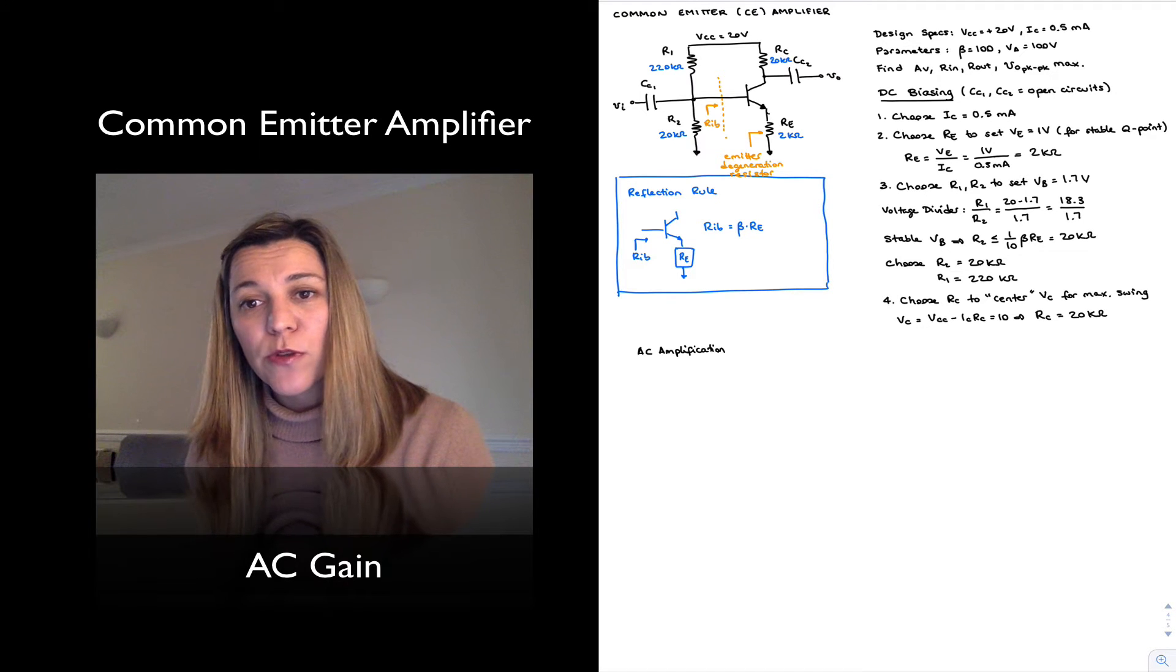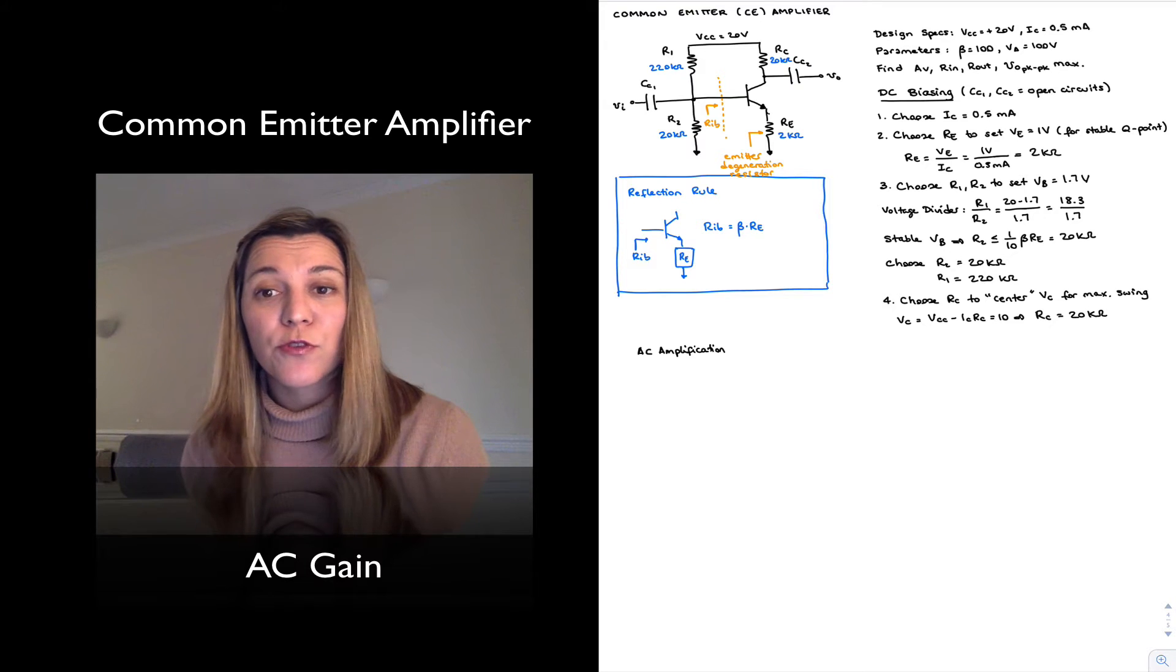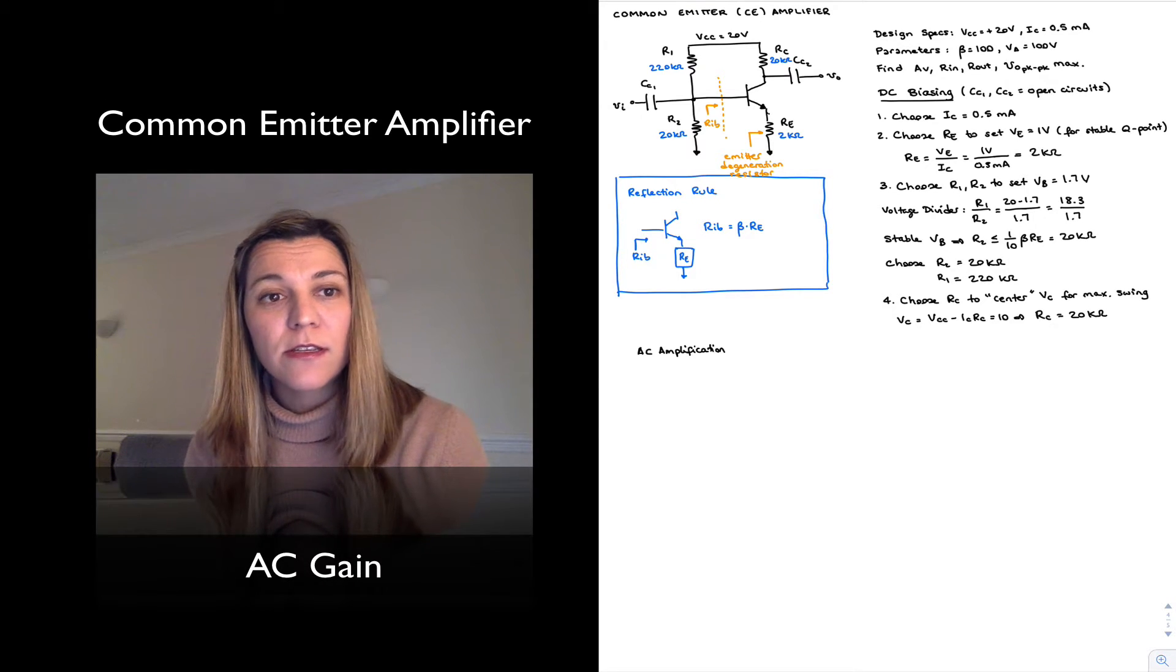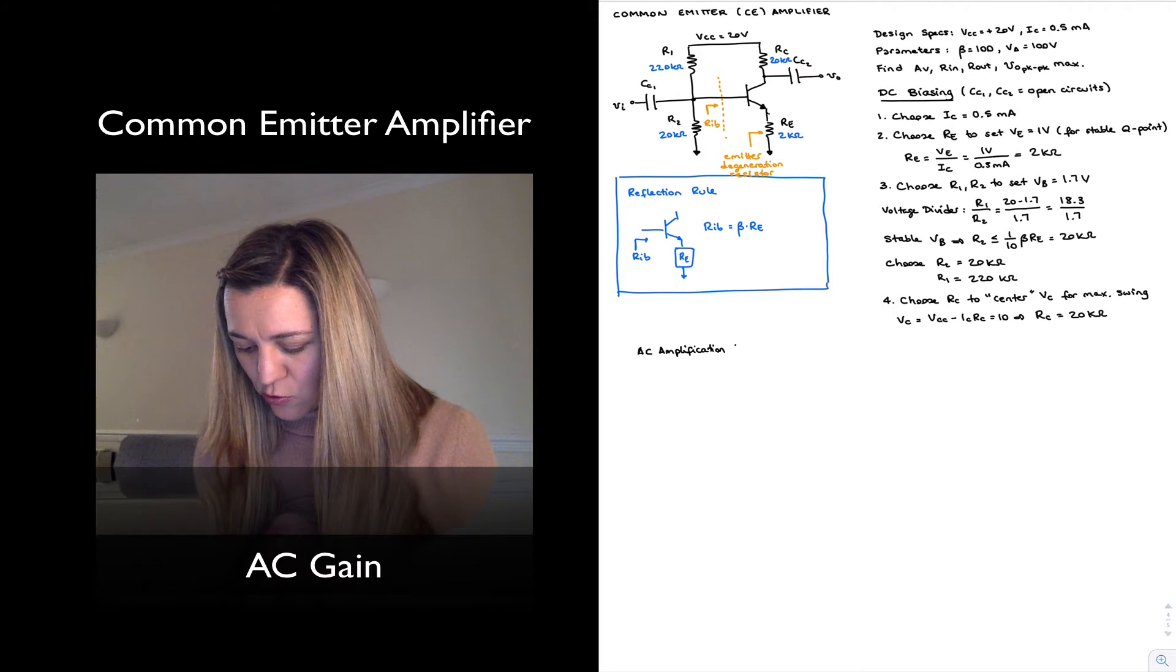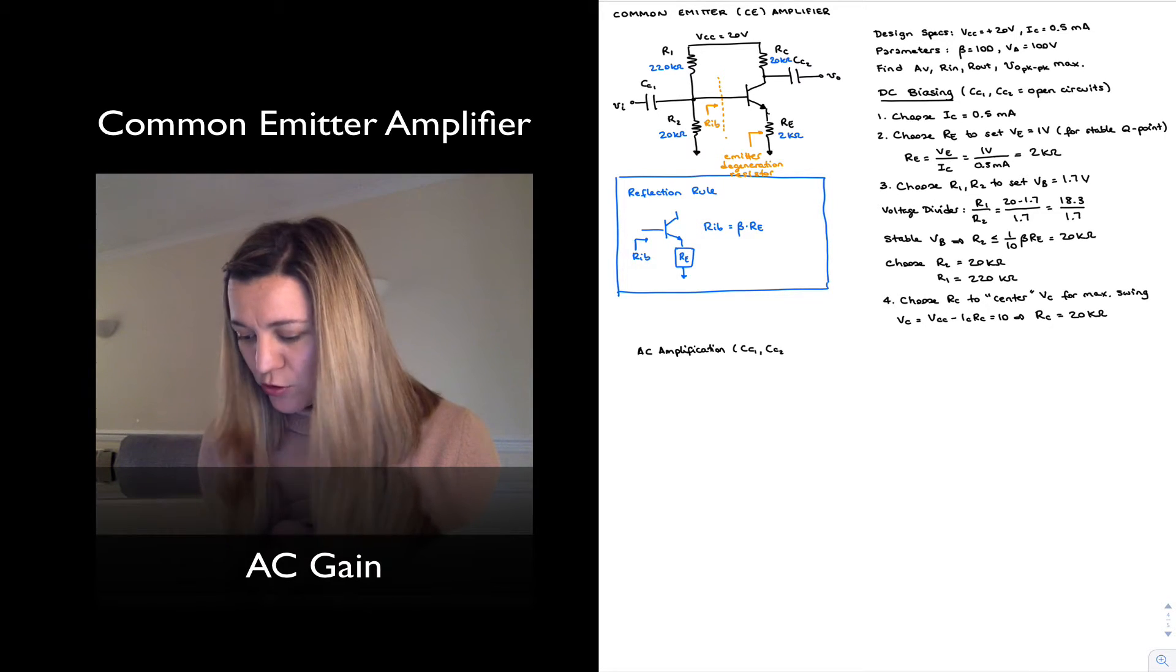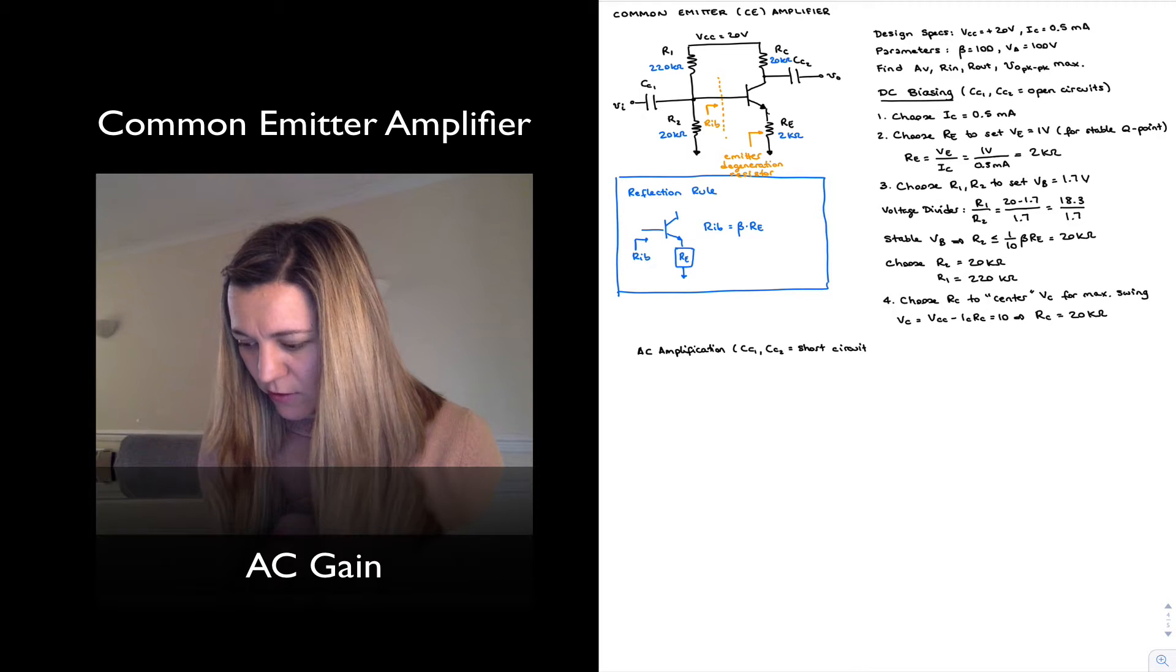Now, in later videos, we're going to find out how to select appropriate values for those capacitors so that they behave as short circuits for our signals of interest. But for now, we're just going to assume that they've been properly selected. So ideally, CC1 and CC2 coupling capacitors behave as short circuits for our AC signal.